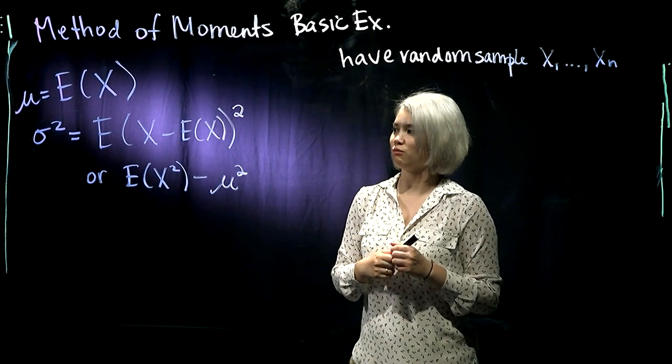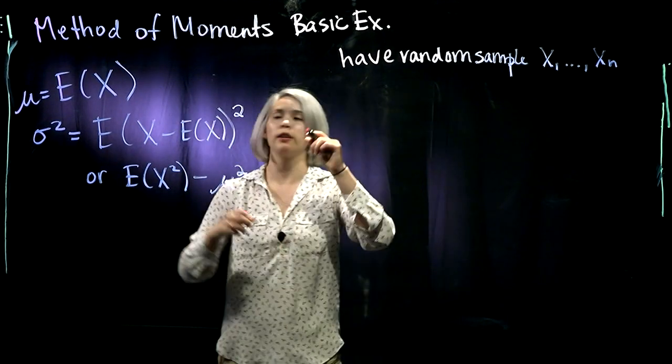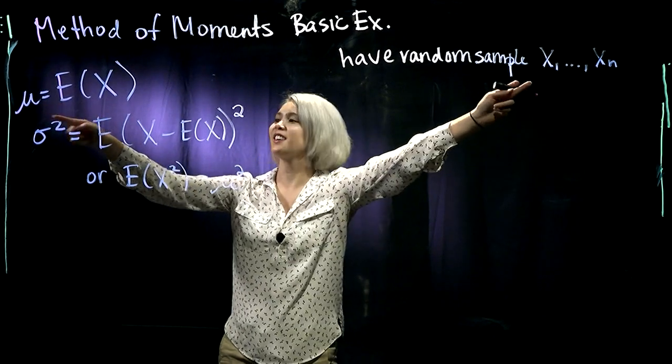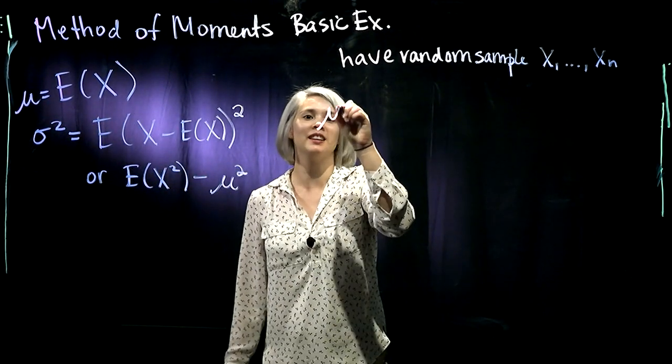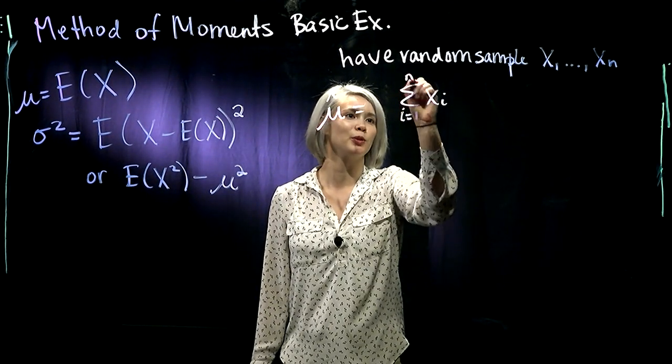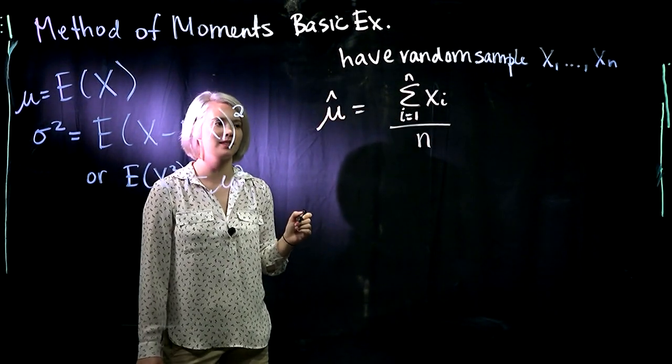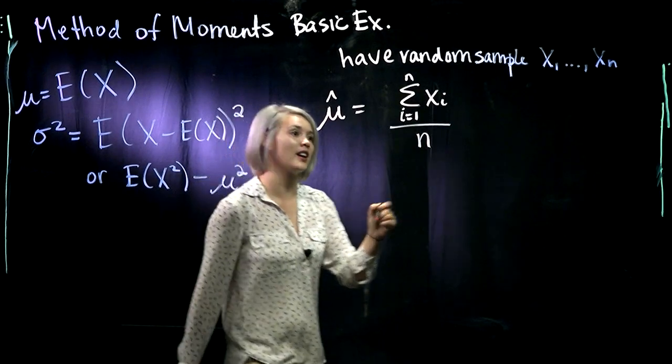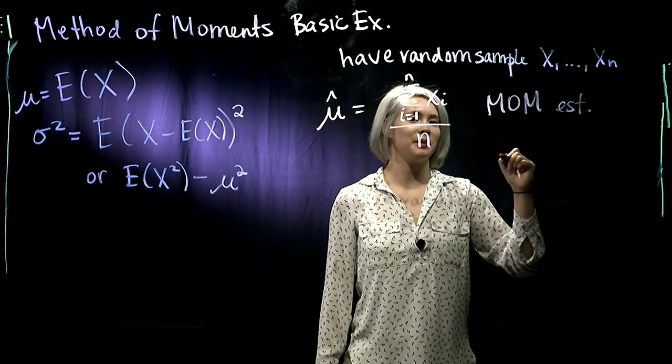All right, so easy thing to do would be to start with μ. So we have our random sample of size n. We're looking for the sample mean. So then we can estimate μ with the sum from i equals 1 to n of those x's divided by the sample size. So this is our method of moments estimator.